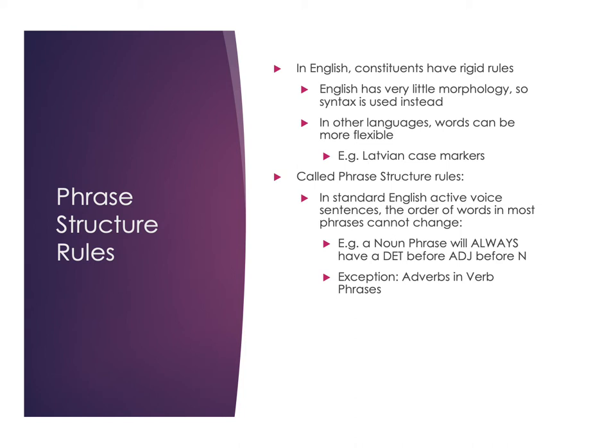A noun phrase will always have a determiner that will always come before our adjectives, and that will always come before our noun. That doesn't change — we can't move those around within a noun phrase and still have it make sense. The one exception, which we'll see in verb phrases, is that adverbs can move around in a sentence. They don't have to stay in their same spot or even stay in the verb phrase. Most of our word classes don't have that freedom.